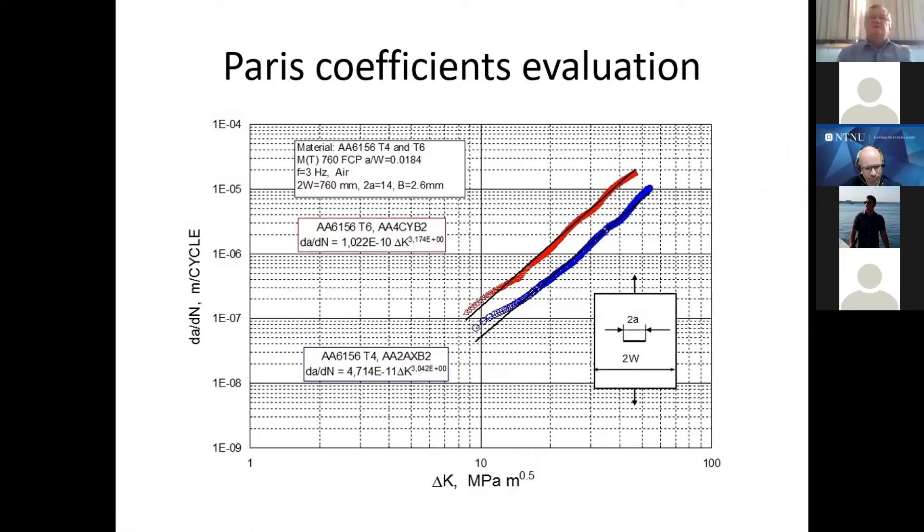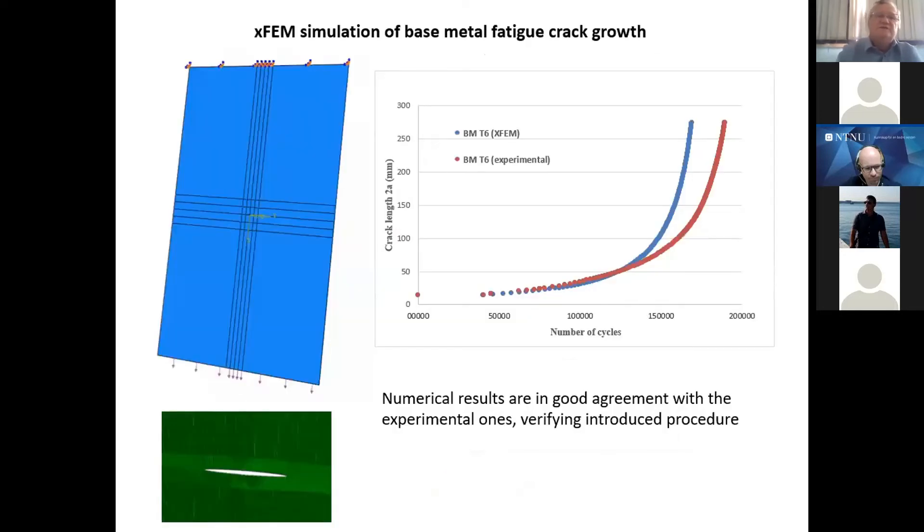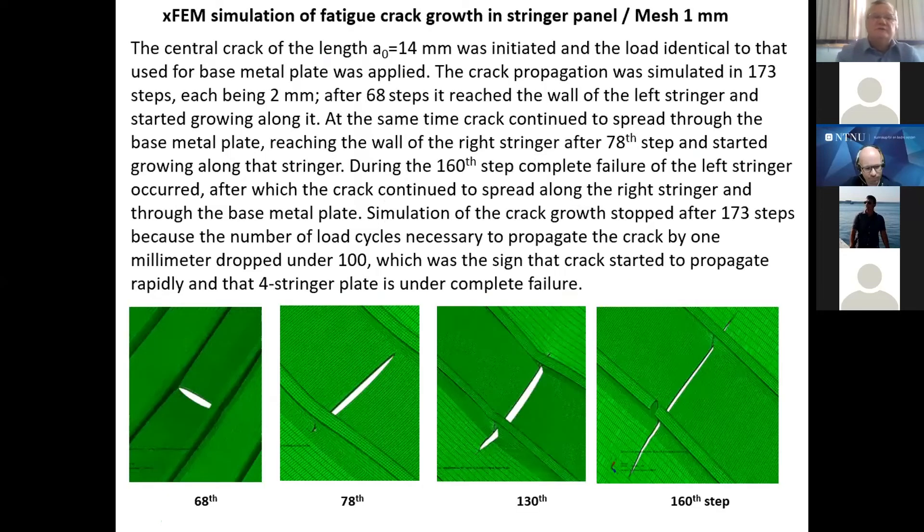We can see here some results for two different alloys. We can see this linear part of a curve which corresponds to Paris law. So this is how we determined the coefficients, C and M. And then we used these coefficients to numerically simulate a panel. In the first phase, that simulation was just for a panel without stringers, so that we verify our numerical procedure. These two curves actually show that numerical simulation is acceptable. Difference is not too big, and also our numerical procedure tends to be conservative. So from both points of view, we were satisfied and continued our work for the panel with stringers,